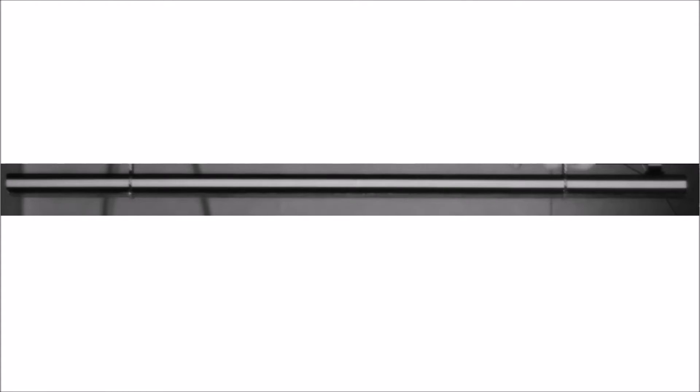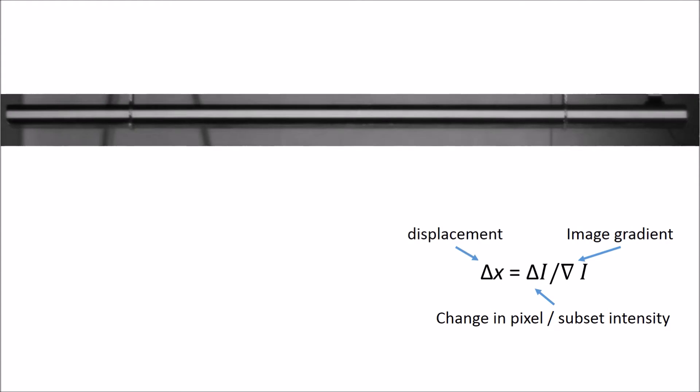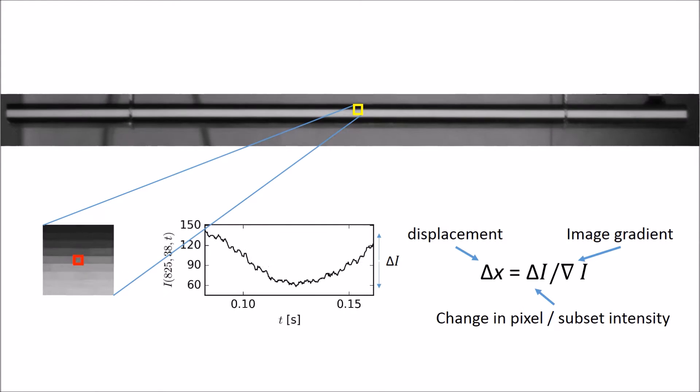However, they can be identified using various optical flow algorithms. In our case, we opted for a simplified gradient-based optical flow, which works by relating the change in pixel intensity via the intensity spatial gradient to the displacement, allowing for every pixel to act as a single-degree displacement sensor.